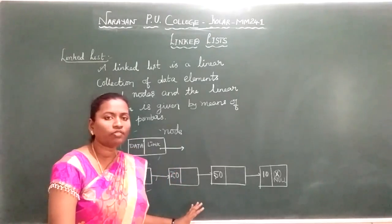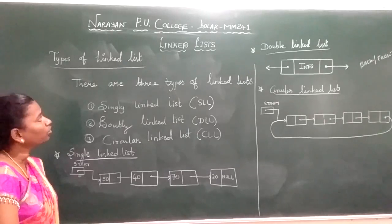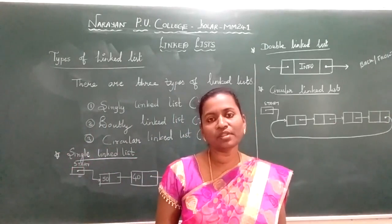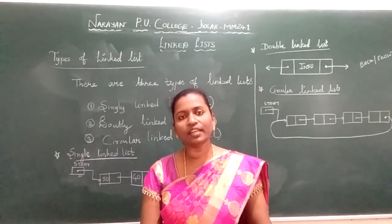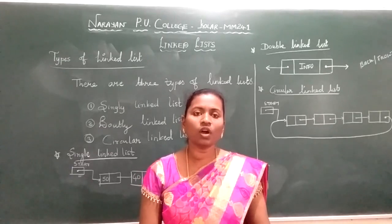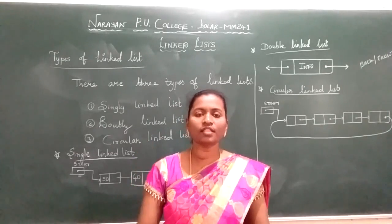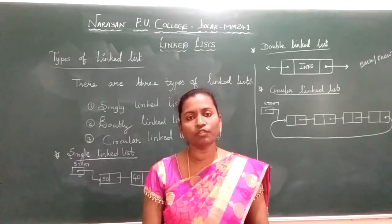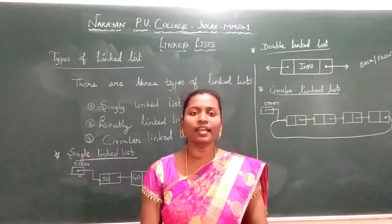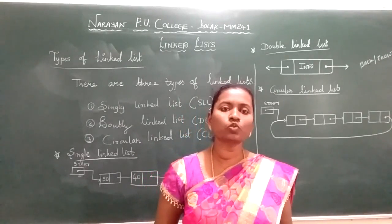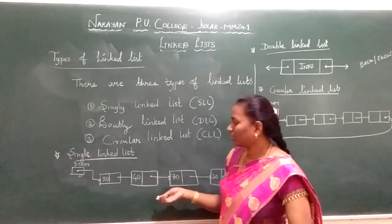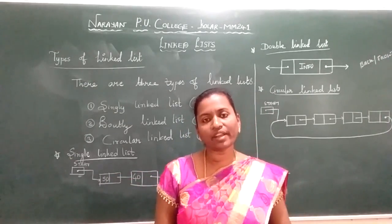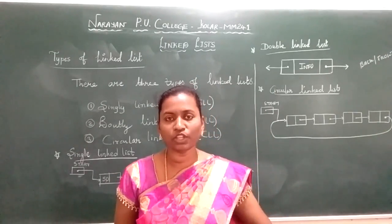Next we will see the types of linked list. Linked list is a linear data structure in which elements are arranged in a linear fashion. Each element in the linked list is called a node. A node contains both the data part — also called the info part — and the link field. The data field, or info field, is where we exactly store the element. The link field holds the address of the next node.